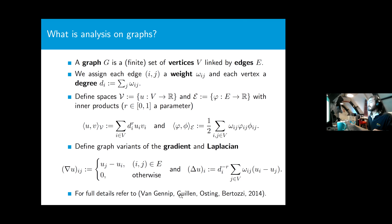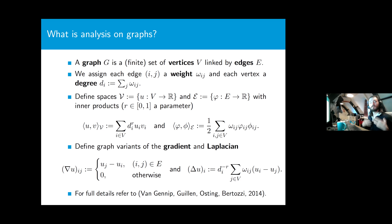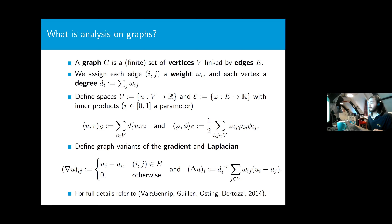This Laplacian is the graph Laplacian studied in combinatorics for many decades. The parameter R encodes the normalization of this Laplacian. When R equals one, we get the random walk Laplacian. This normalization is important because the eigenvectors of the graph Laplacian are relatively good at segmenting images, but that only really works when you normalize the graph Laplacian. For full details of this graph analysis framework, I refer you to Van Genep et al.